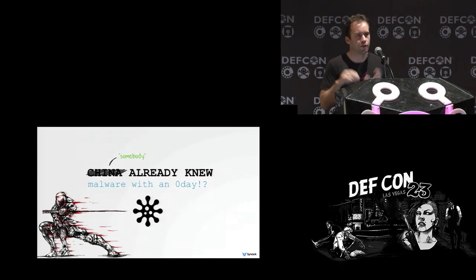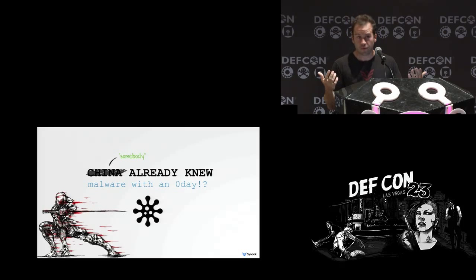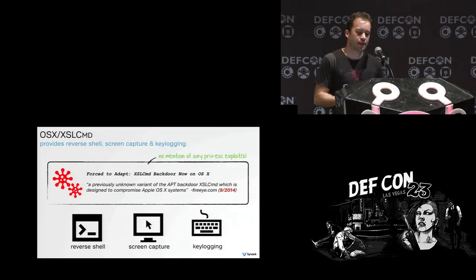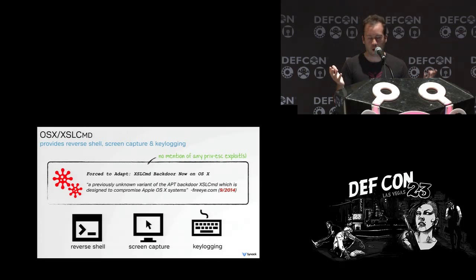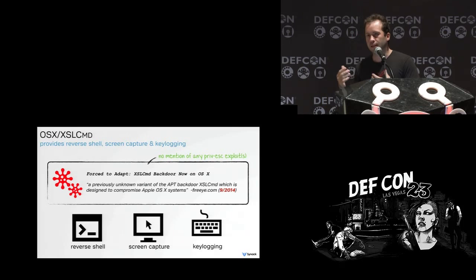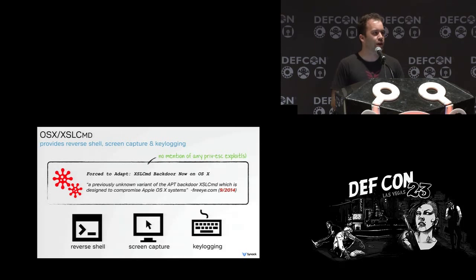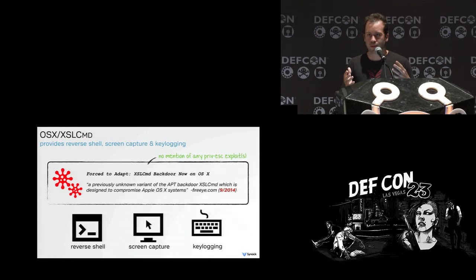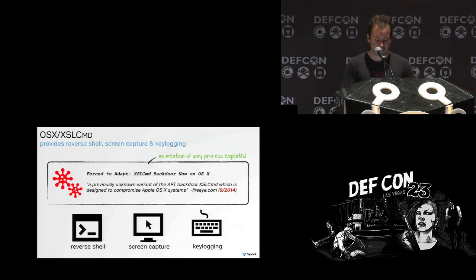Recall the timeline. Emil found the bug in October and reported it to Apple, but there was malware actually exploiting this vulnerability as a zero day before Emil's discovery. XSL CMD is an OSX persistent backdoor submitted to VirusTotal in August 2014 — no AVs detected it. A few months later FireEye came out with a report determining it was a new piece of APT-related OSX malware. It provides the attacker the ability to create a shell, screen capturing, and key logging. The report had no mention of any local privilege escalations — I believe their analysis completely missed it.